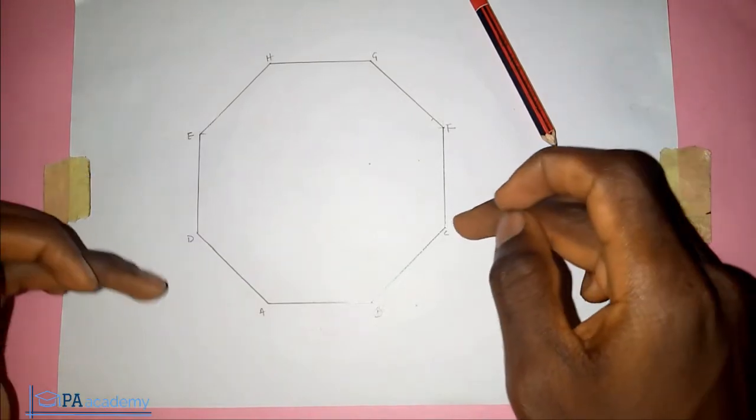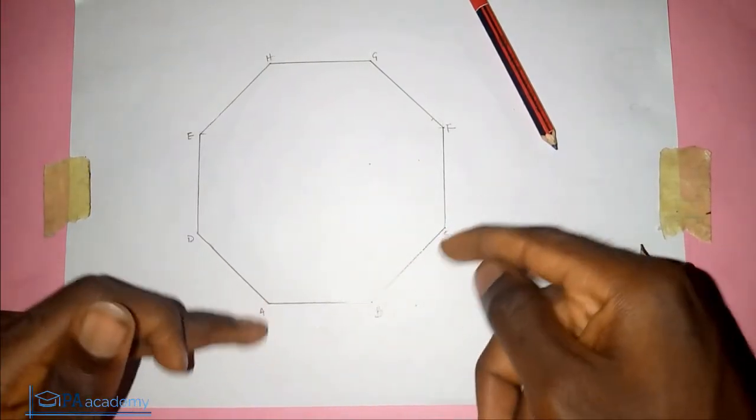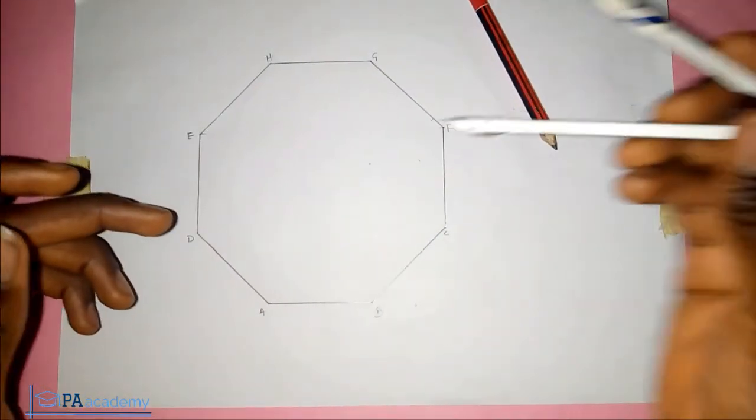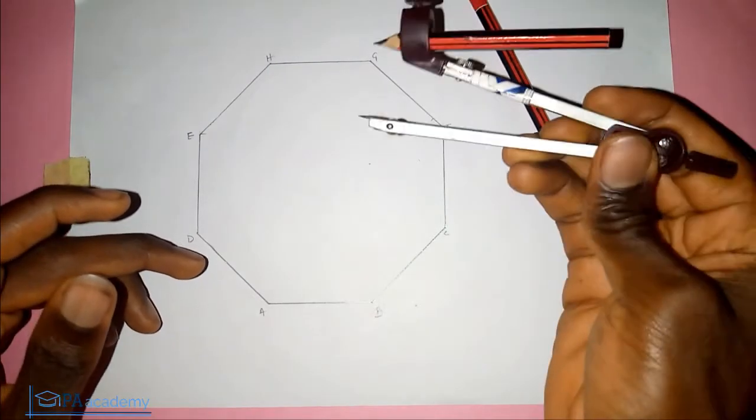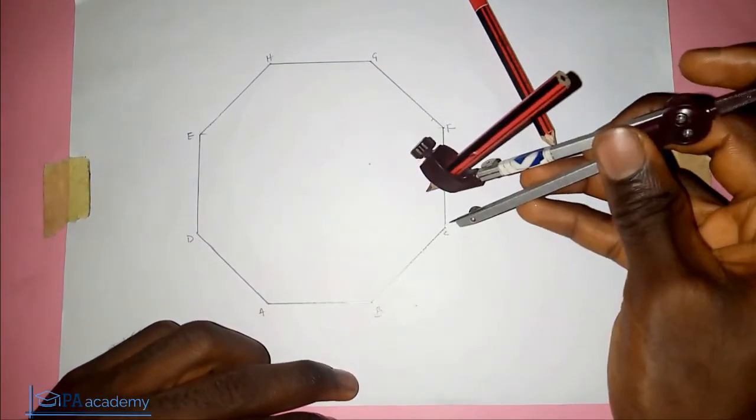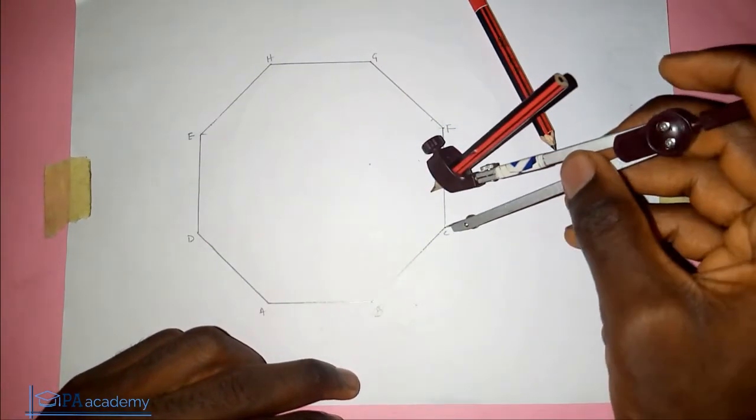For this video, I'm going to be using angle A and angle C. These are the two angles we're going to be bisecting to get the center. To do that, just pick your compass at any convenient length. I prefer it small like this. Place your compass on point C.